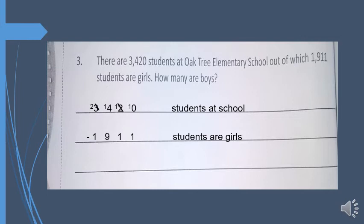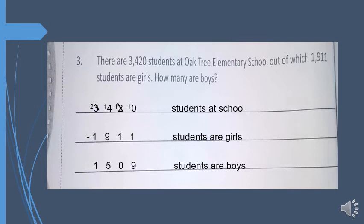I have already done the borrowing. Zero cannot be subtracted from 1, so we ask 2 to give one number — it becomes 10. Then 10 minus 1 is 9. Then 1 minus 1 is 0. Then 14 minus 9 is 5. Then 2 minus 1 is 1. So the total number of boys at Oak Tree Elementary School is 1,509. This was pretty easy and not difficult to solve.